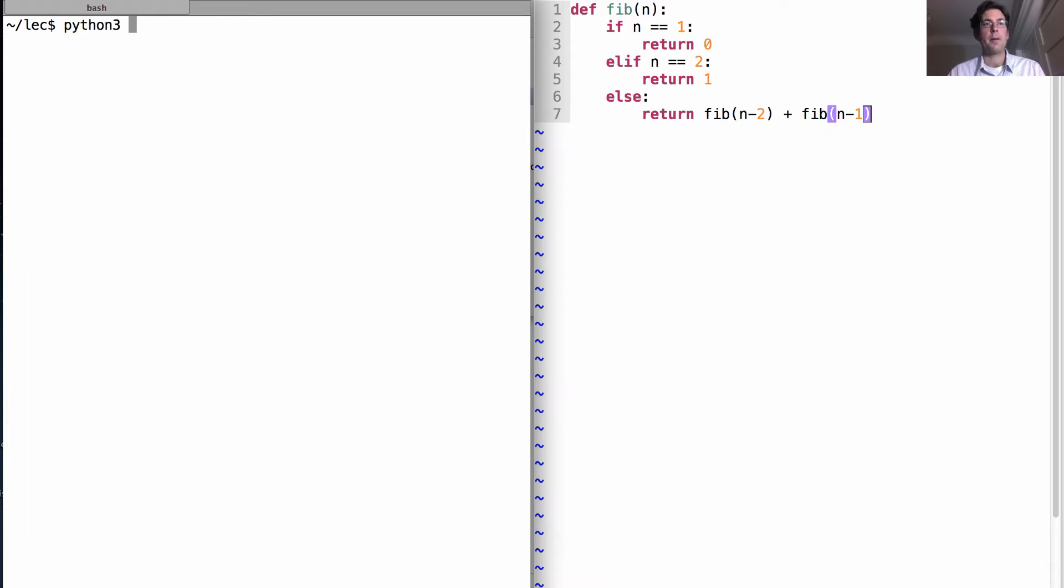If I load this file and then compute the first Fibonacci number, that's 0, the second one is 1, the fifth one is 3, and the ninth one is 21, just as I said.